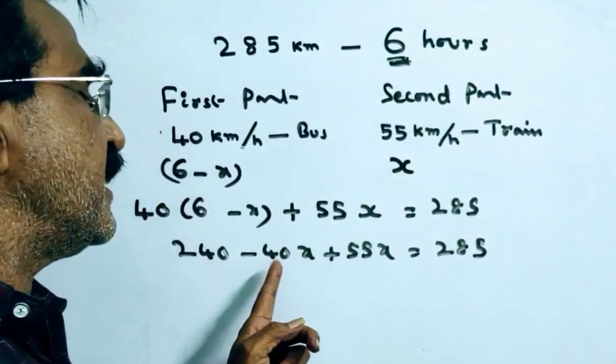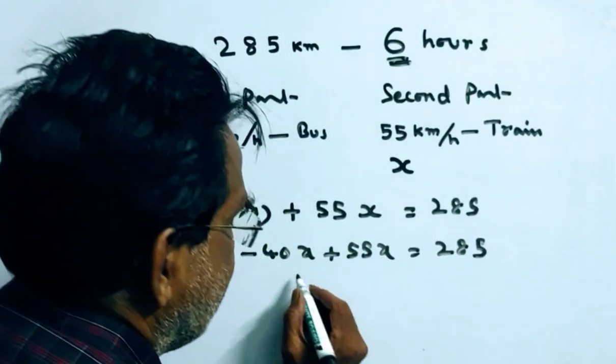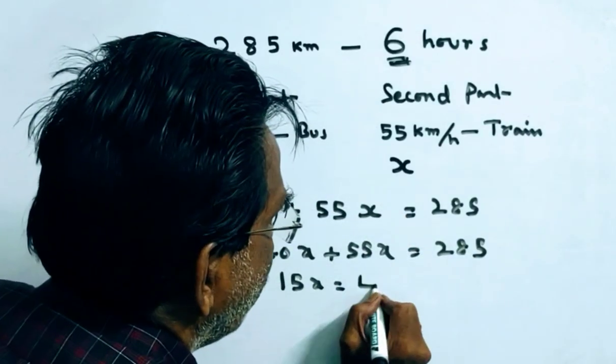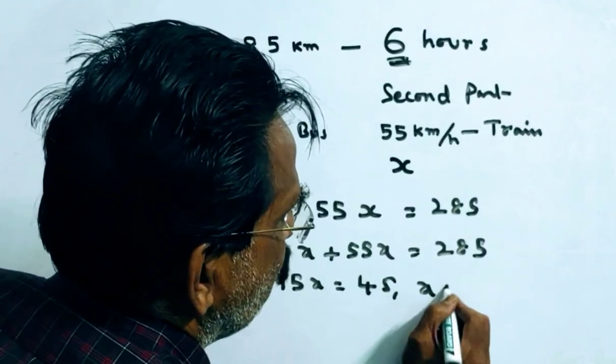55x minus 40x, that is 15x. 15x is equal to 285 minus 240, which is 45. So x is equal to 3.